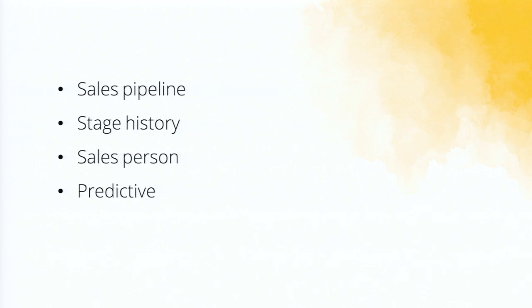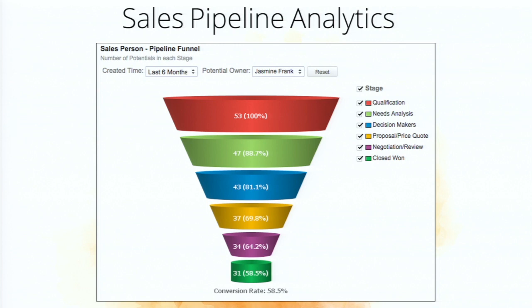Let's get into sales. I'll go through some of the reports offered in these subsections, starting with the sales pipeline analytics. A typical sales funnel has a qualification stage, a closed-won stage, and various stages in between. You get a report showing how many prospects are in whatever stages they're in. There are user filters at the top — you can filter by time, such as last six months, last three months, or for the year — and also by potential owner, the sales rep, so you can see each rep's sales funnel at any point in time.